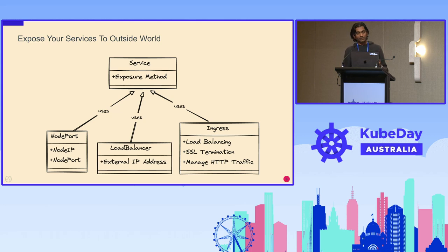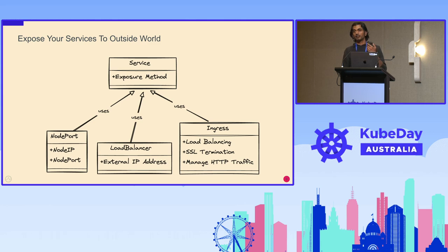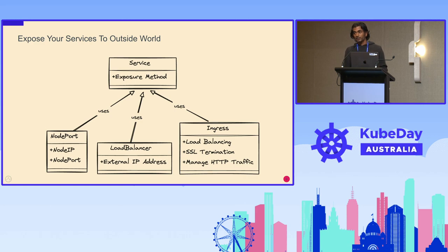When you want to expose the same web service to outside, there are multiple ways to do that. The first approach is NodePort, where you open a specific port to outside and through that you get traffic. Then you can use a load balancer — you get a load balancer from the infrastructure provider and link that to your service. You can also use Ingress, which is the most famous and most widely adopted implementation, giving you capabilities like load balancing, SSL termination, and native support for HTTP traffic handling.